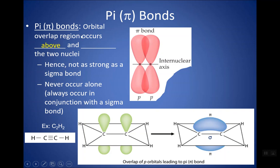That is what a pi bond is — when the orbitals containing the bonding electrons fall above and below the two nuclei. What allows this to happen is the P orbitals. If you remember, P orbitals have a figure-eight shape. If two atoms have parallel P orbitals, the pi bond can form from those orbitals, and now the electrons hover above and below rather than directly between. So sigma is when the electrons are directly between; pi is when the electrons are above and below.